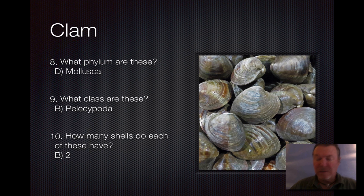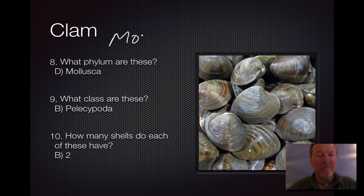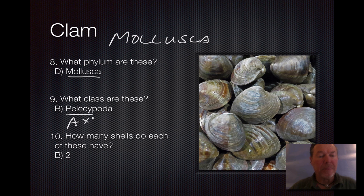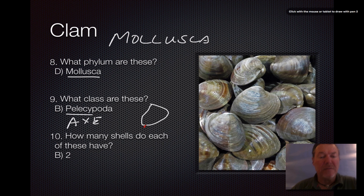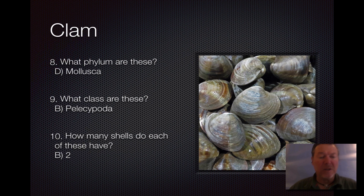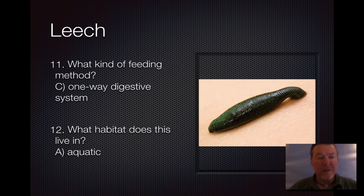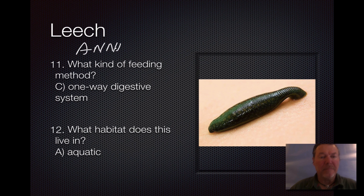The clam is Kingdom Animalia. These are mollusks — Phylum Mollusca — and the class is Pelecypoda. 'Pelecypoda' means 'axe foot,' because the foot that comes out of a clam when they're digging in the sand looks like an axe. As for how many shells they have, if you look at a clam you can see it has two shells.